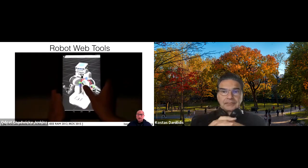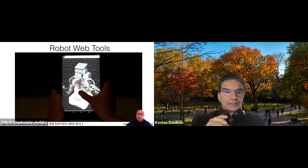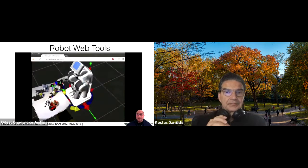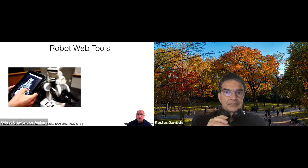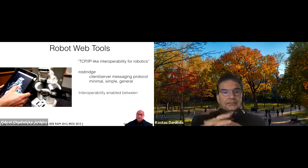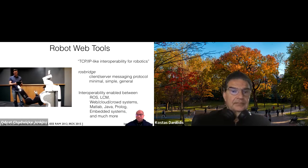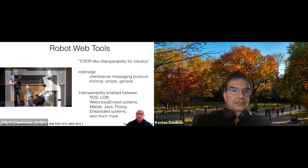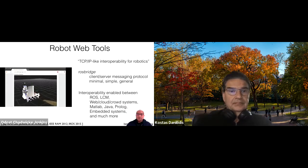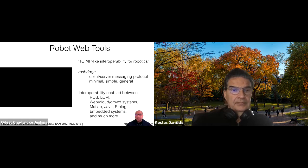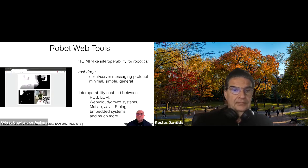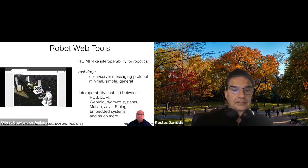A lot of what this built on is a project I helped found called the Robot Web Tools project. This is essentially building a network protocol — an applications layer network protocol — that allowed for TCP/IP-like interoperability for robots. The core of this is the ROS Bridge protocol, a very simple messaging protocol that allows any type of system to talk with and work with a robot running the Robot Operating System, ROS. At the time it wasn't just web browsers — it was about having MATLAB be able to talk to robots running ROS, but there are all sorts of other systems.